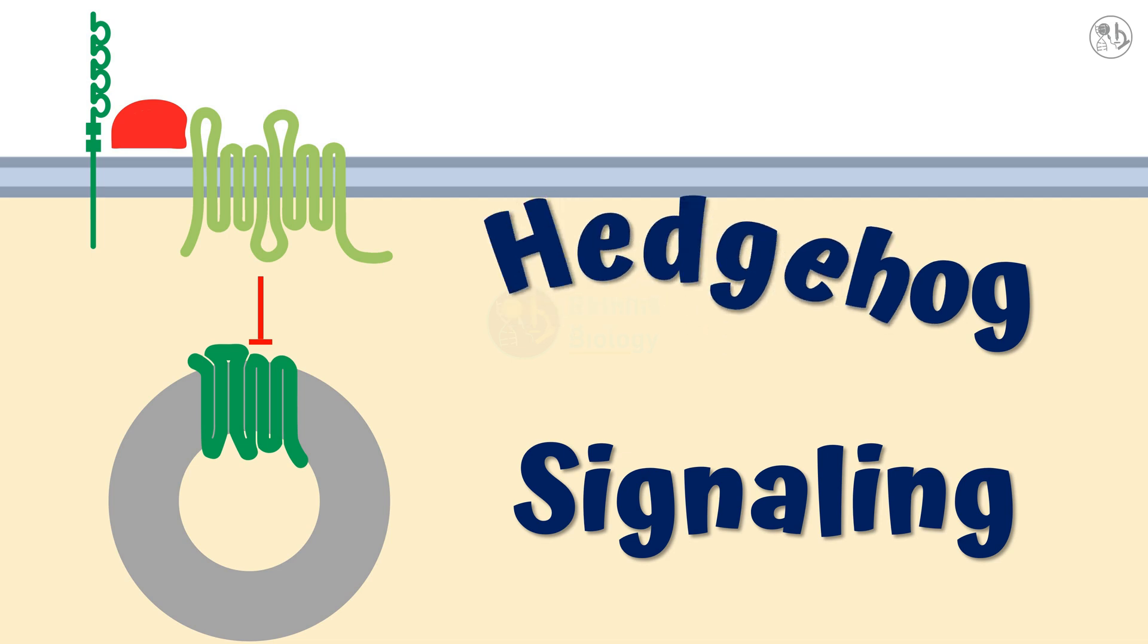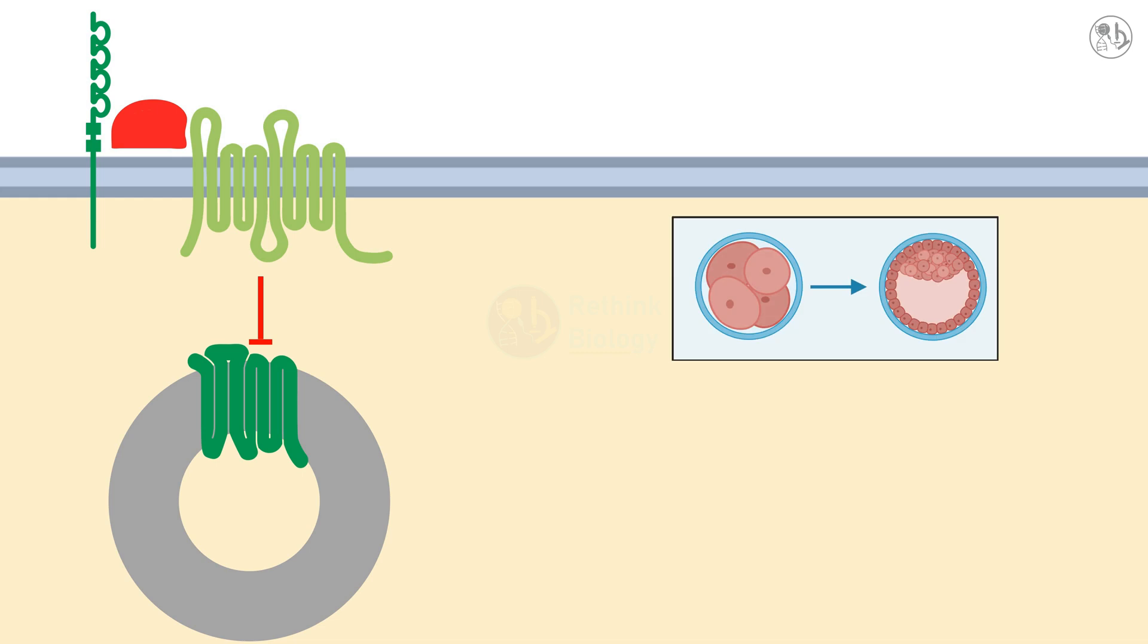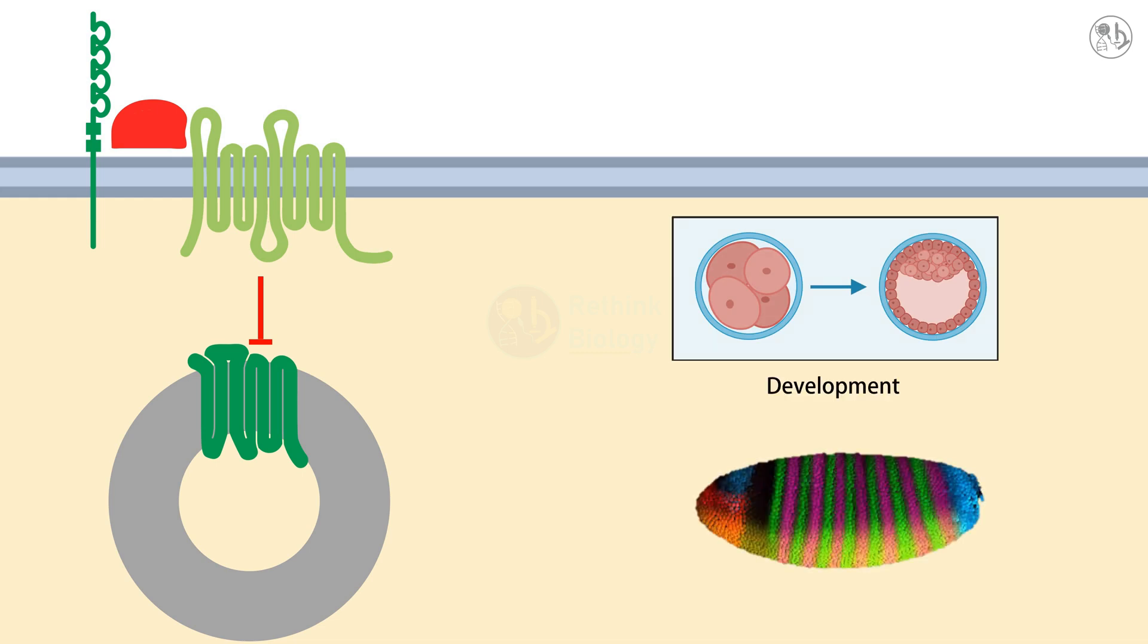Hedgehog signaling is a molecular pathway that controls the development and patterning of many tissues and organs in animals. Let's see how this pathway works in detail.